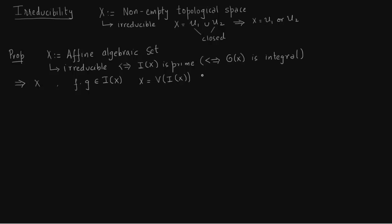We know the relationship: X equals the vanishing set of I(X). The vanishing set of I(X) is a union of V(F) and V(G), which comes from the product since FG lies in I(X) — this gives the reverse inclusion. Why the union? Because if F is zero then F times G is zero, and if G is zero then F times G is also zero, so we just need the union.